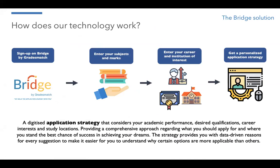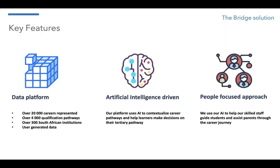How it works is that a learner would come and sign up on Bridge. They enter what subjects and marks they do, what their career aspirations and institution interests are, and then the machine learning algorithms in the background generate a strategy for them — what we call an application strategy. We don't just say because you want to study law, apply to WITS. We say, based on the totality of your picture, this would be the most suitable approach. We explain the reasons as to why those decisions were made by the system — hence it's in the domain of explainable AI.